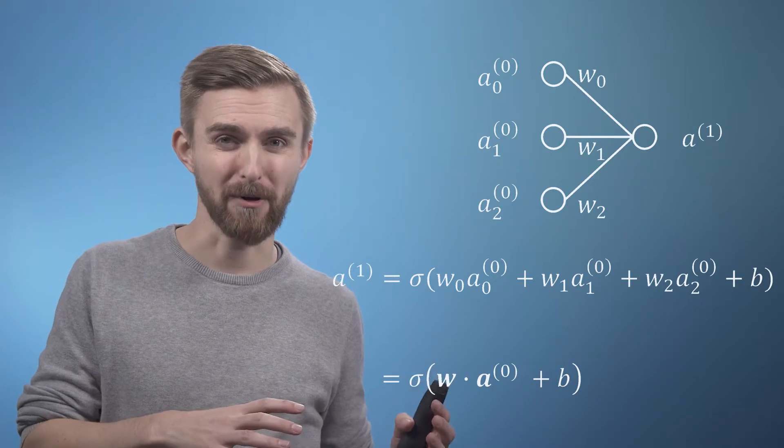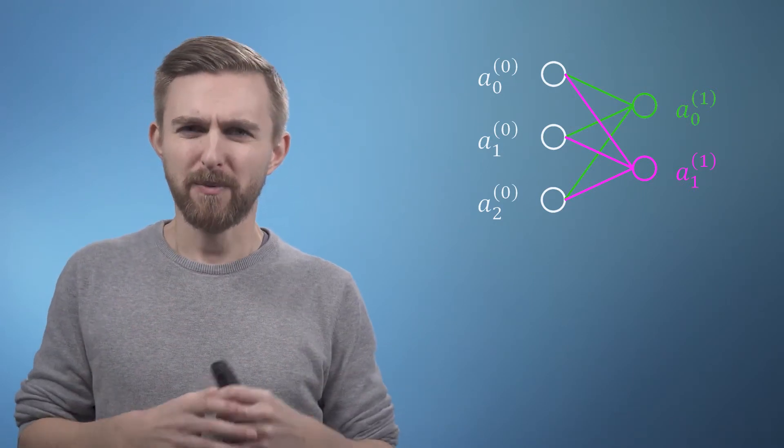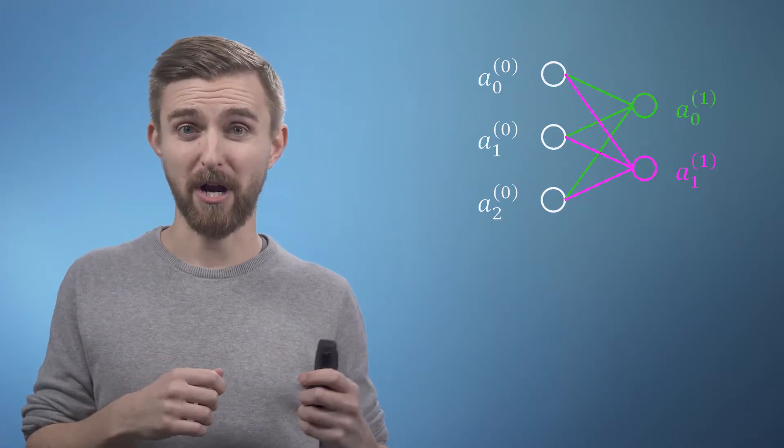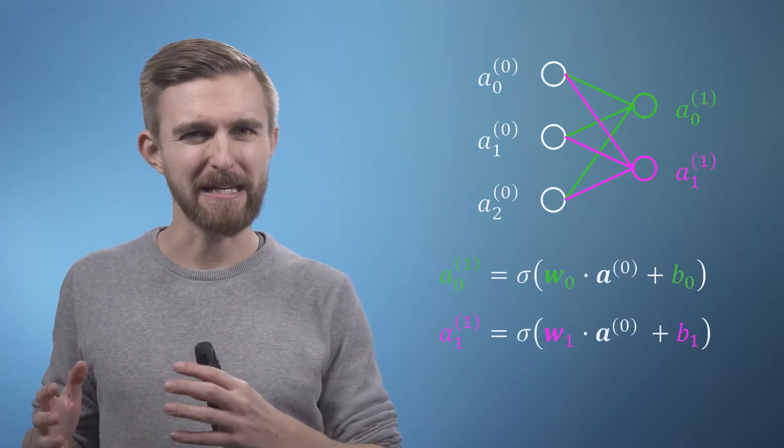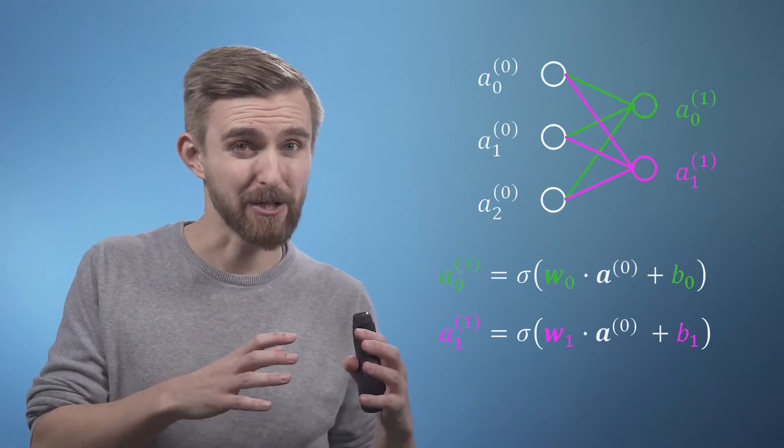So let's now apply the same logic to the outputs. Adding a second output neuron, we'd call these two values a10 and a11, where we now have twice the number of connectors, each one with its own weighting and each neuron has its own bias. So we can write a pair of equations to describe this scenario with one for each of the outputs, where each equation contains the same values of a0 but each has a different bias and vector of weights.